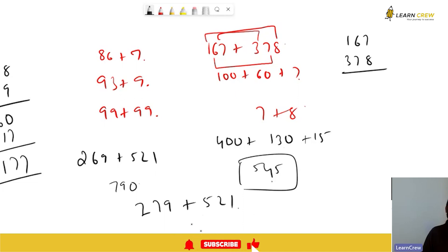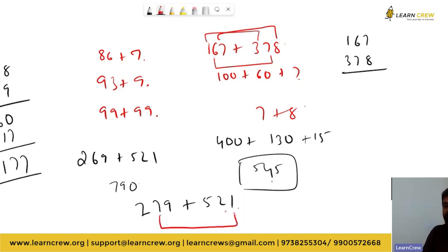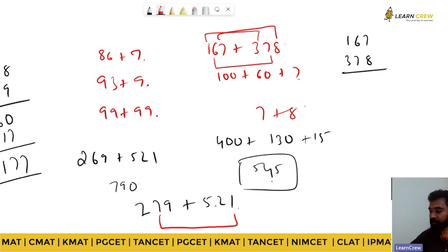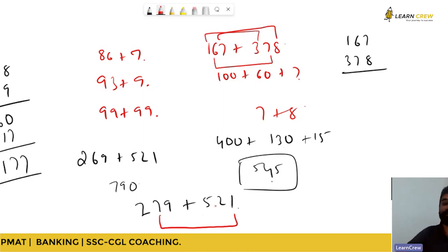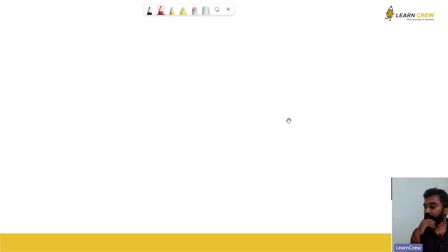In this case, what you can do is 79 and 21 combine to make 100. Find those terms which can add and make it 100 or 1000, and then you can start simply. What is 36 plus 63?